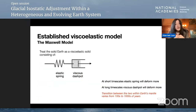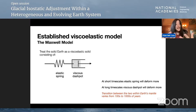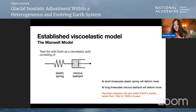There is an established model called the Maxwell model. It can describe those two end members of deformation. It's comprised of an elastic spring and a viscous dashpot in series. If you apply a really fast stress, the elastic spring deforms — the earth behaves like an elastic solid. If you slow that stress down, the viscous dashpot takes up more of that deformation. The transition between these two end members can be hundreds to thousands of years within the earth's mantle, depending on where you are and how hot it is. This is basically what most GIA modelers use.